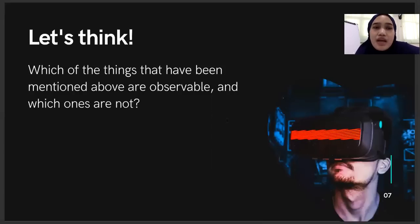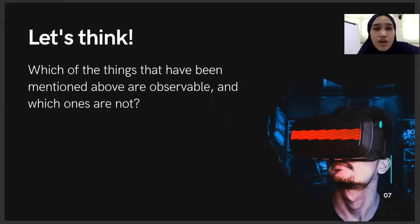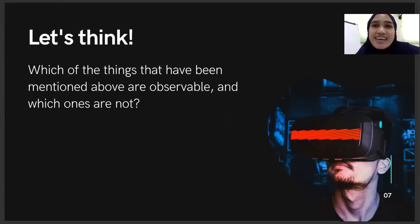Now let's think. Tadi yang sudah disebutkan: ada height, ada PISA score, ada feelings, ada ethics, ada experience. Yuk kita coba berpikir, mana yang observable dan mana yang tidak observable. Observable artinya bisa dilihat pakai mata. Kalau non-observable, berarti tidak bisa dilihat pakai mata — dia harus kita dekati, harus kita ajak komunikasi, baru itu muncul. Kayak feeling misalnya — tidak bisa kita lihat. Yang bisa kita lihat? Ekspresinya, ekspresi wajahnya. Tapi apa yang dia rasakan, we will never know until we ask them.